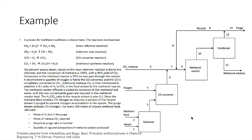The stoichiometric quantity of oxygen is fed to the CO converter and the CO is completely converted to CO2. Additional makeup CO2 is then introduced to establish a 3-to-1 ratio of hydrogen to carbon dioxide in the feed stream to the methanol reactor. The methanol reactor effluent is cooled to condense all the methanol and water, with the non-condensable gases being recycled to the methanol reactor feed.